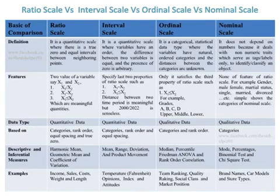The definition of ordinal scale is that it is a categorical statistical data type where the variables have natural ordered categories and the distances between the categories are unknown, while the definition of nominal scale is that it does not depend on number because it deals with non-numeric traits which serve as tags or labels only to identify or classify an object.